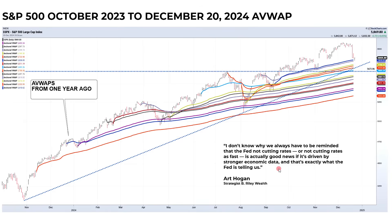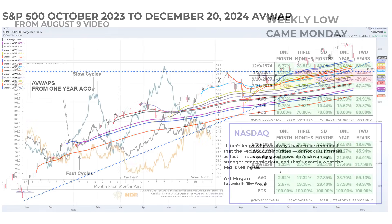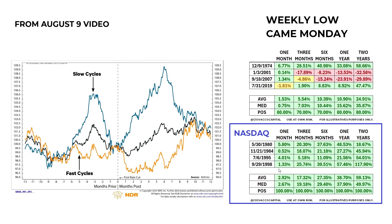As covered in past videos and noted in the blue box from August 9, 2024: interest rate cycles that feature slow and lower magnitude cuts from the Fed tend to occur when the economy is stronger, and stock market performance is decidedly better under those circumstances.